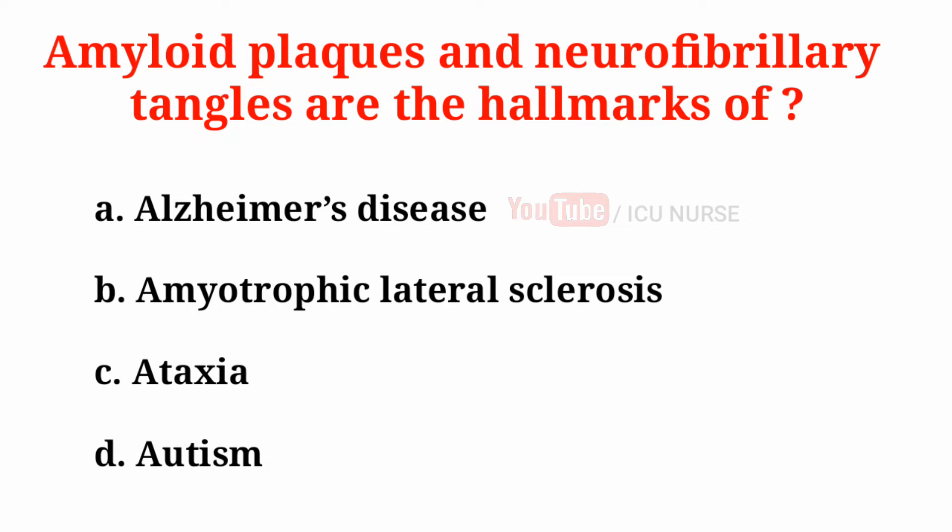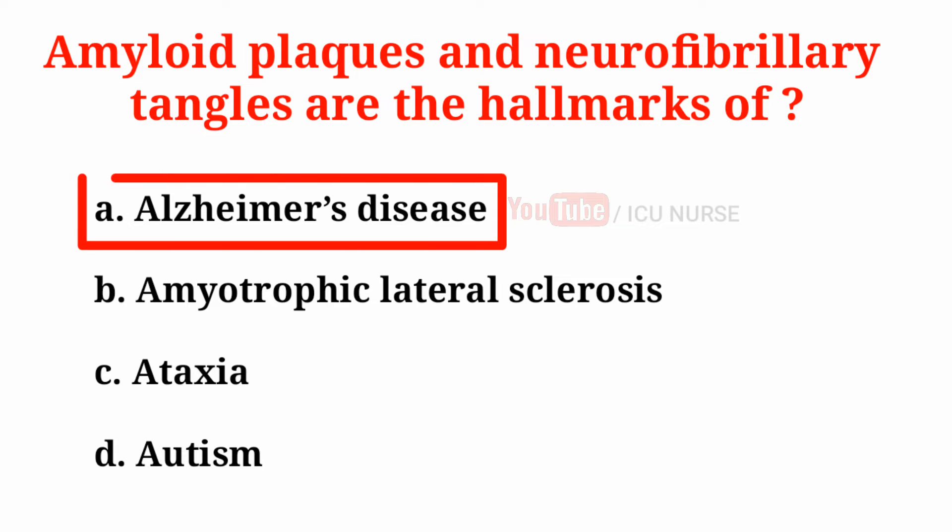Amyloid plaques and neurofibrillary tangles are the hallmarks of: A. Alzheimer's disease, B. Amyotrophic lateral sclerosis, C. Ataxia, D. Autism. The correct answer is A. Alzheimer's disease.